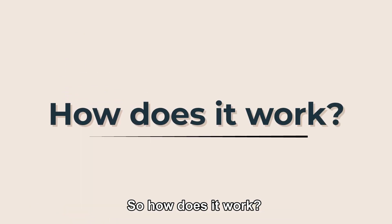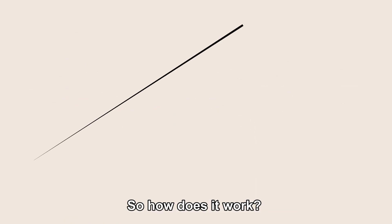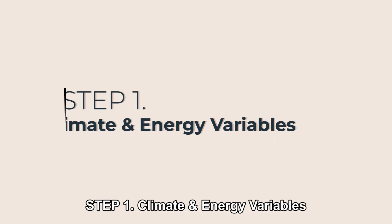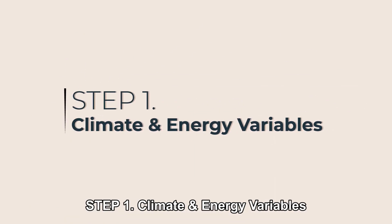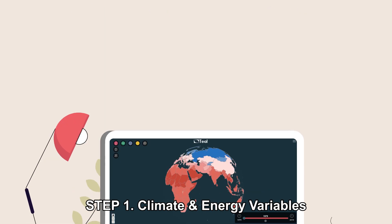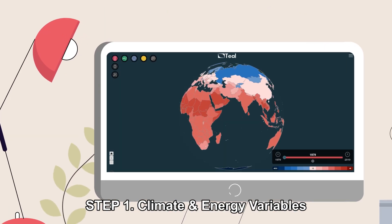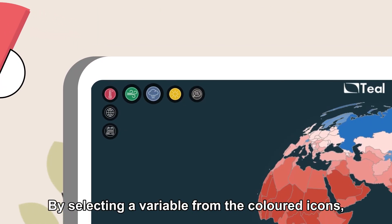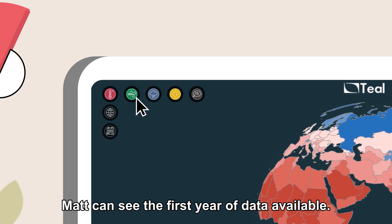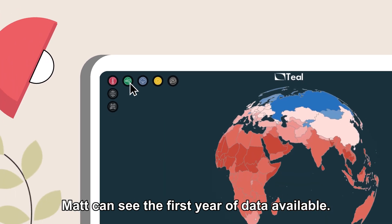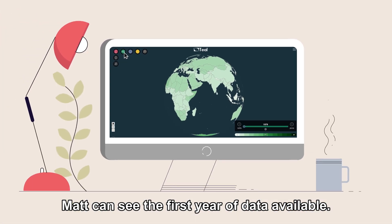So, how does it work? Step one: climate and energy variables. By selecting a variable from the colored icons, Matt can see the first year of data available.